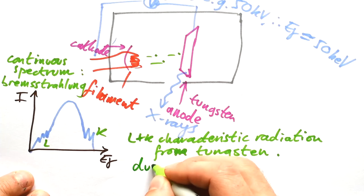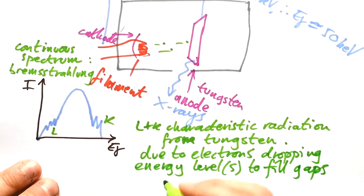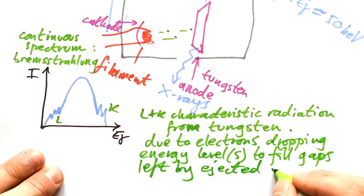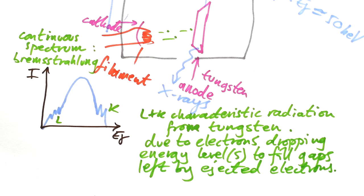This is due to electrons dropping in energy level to fill the gaps left by ejected electrons. The electrons coming in don't necessarily have to collide with the electron on the outer shell of the tungsten atoms. An electron could collide with an electron that's right next to the nucleus. That one escapes, but it's left a gap. So an electron drops down from the level above, and that's when we get these L and K photons being produced.